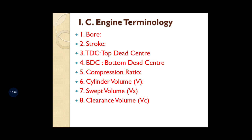Cylinder volume is the sum of swept volume and clearance volume. Swept volume is the volume of space generated by the movement of the piston from one dead center to another dead center — the piston sweeps inside the cylinder as it moves. Clearance volume is the space remaining in the cylinder when the piston is at the top dead center.